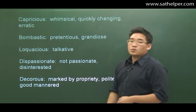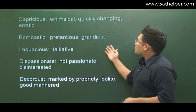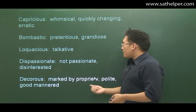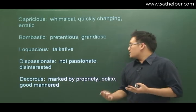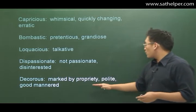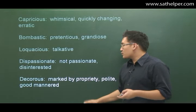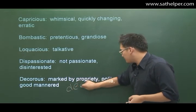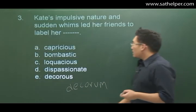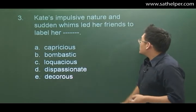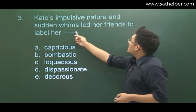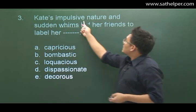Capricious means whimsical or quickly changing. Bombastic means pretentious or grandiose. Loquacious means talkative. Dispassionate means not passionate, or disinterested. Decorous is a tricky word — it doesn't mean decorated; it means marked by propriety, polite, or good-mannered. It comes from the word decorum, which means politeness. So looking back at the sentence, we see that Kate's qualities are that she has sudden whims and she's impulsive.